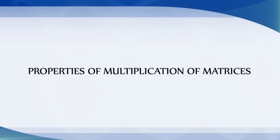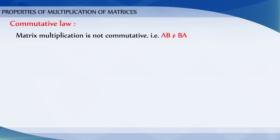Properties of multiplication of matrices. Commutative law: Matrix multiplication is not commutative, i.e., AB ≠ BA.